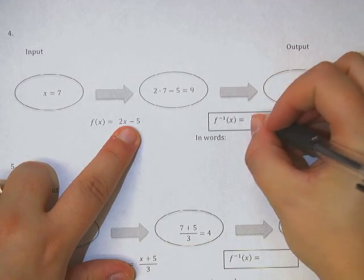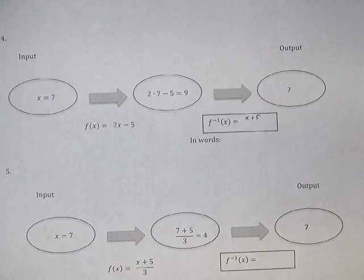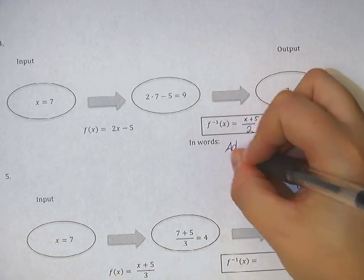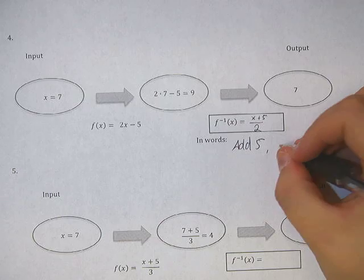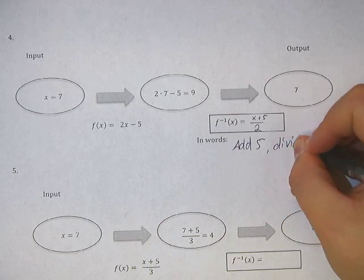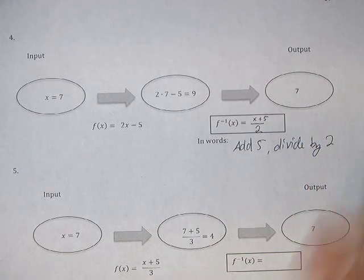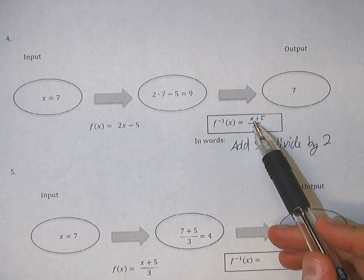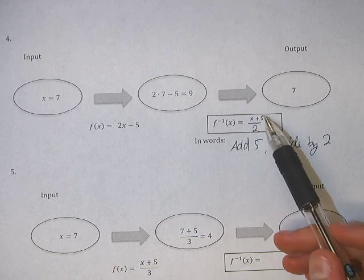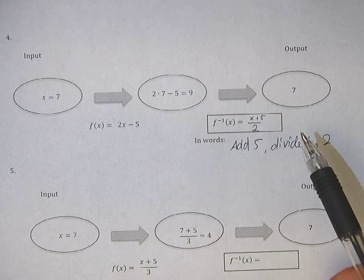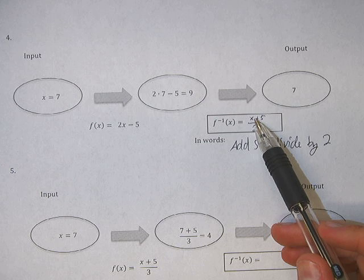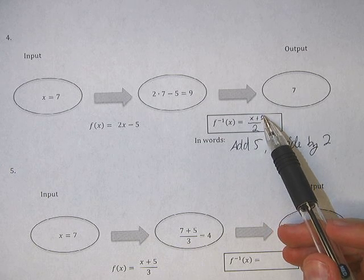And remember that we're basically going to go from the outside in. We're going to take the steps exactly in reverse. So what this means is that we're going to start with a number, with our input. We're going to add 5, because that was the last step that we did to it. And then divide by 2. So in words, we add 5, divide by 2. Like that.